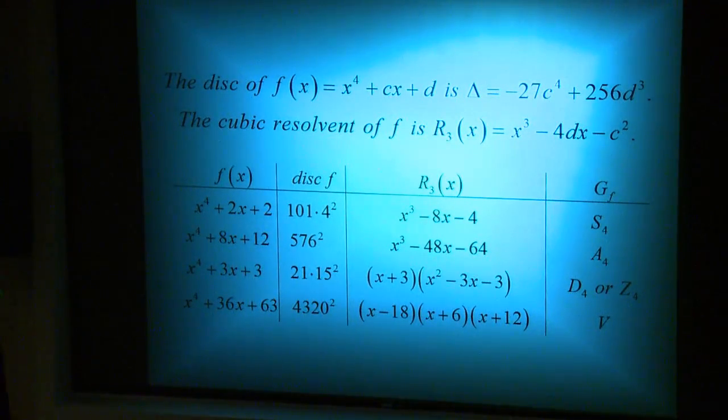So here we have, this would be the discriminant of f, of a particular type. You can just basically take the coefficients in and just plug them in here, and you can actually get the discriminant for this particular type of quartic. Also, with the cubic resolvent, you do the same thing. You're just taking your coefficients C and D and plugging it into this particular form.